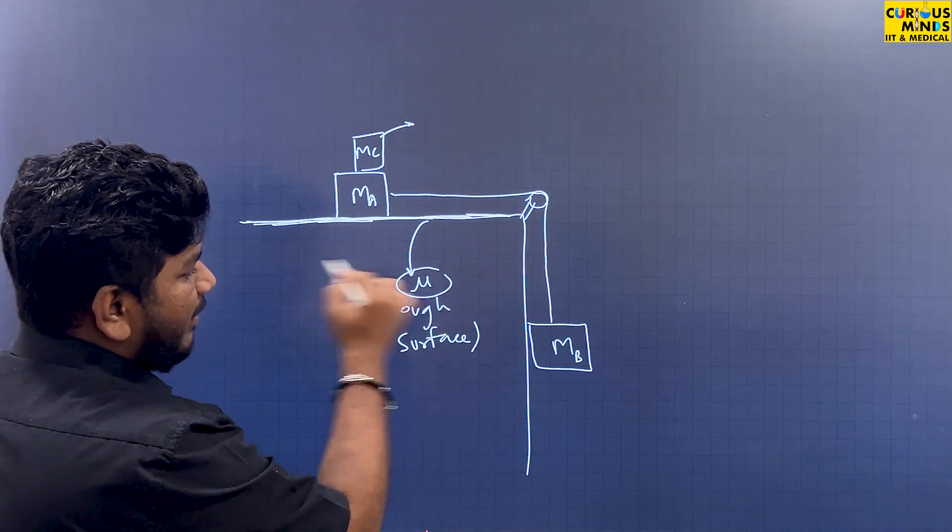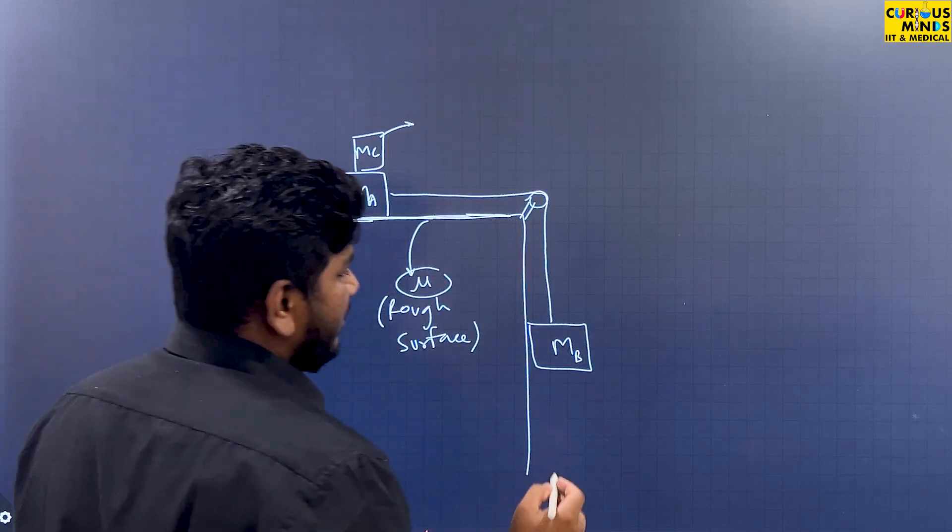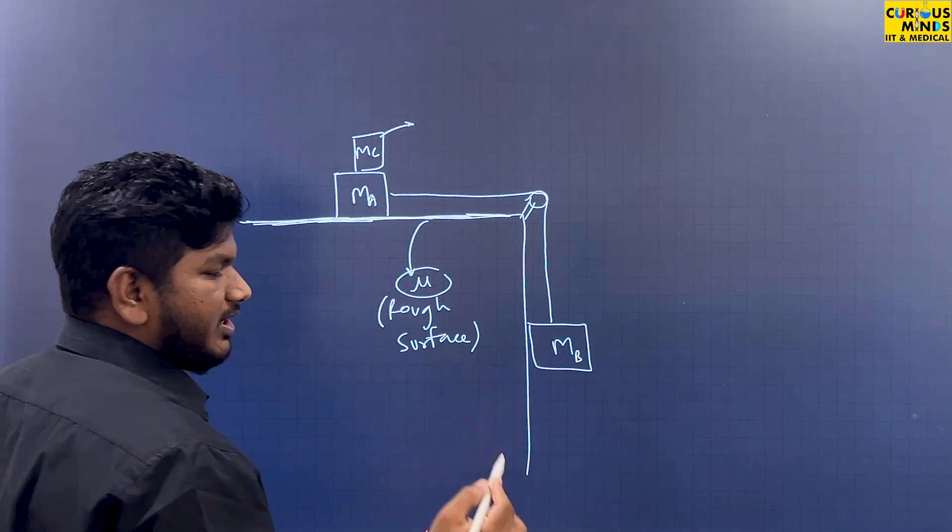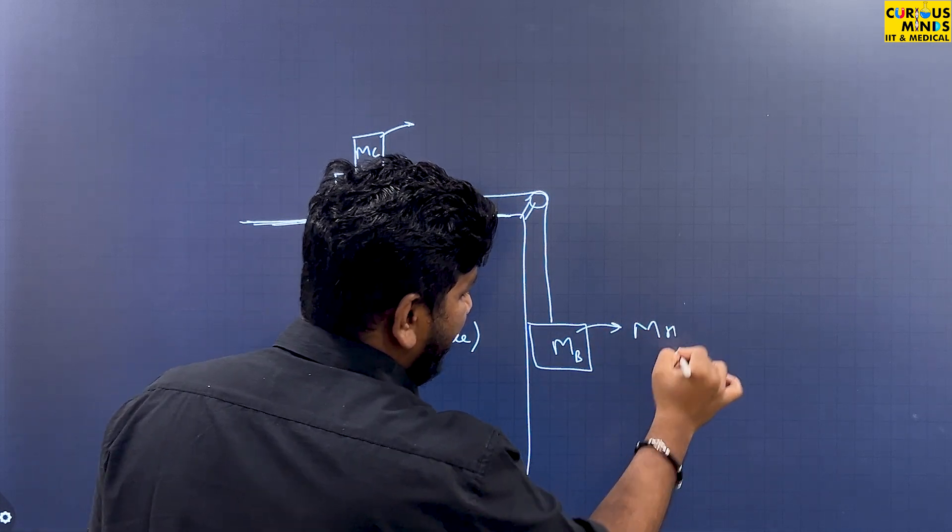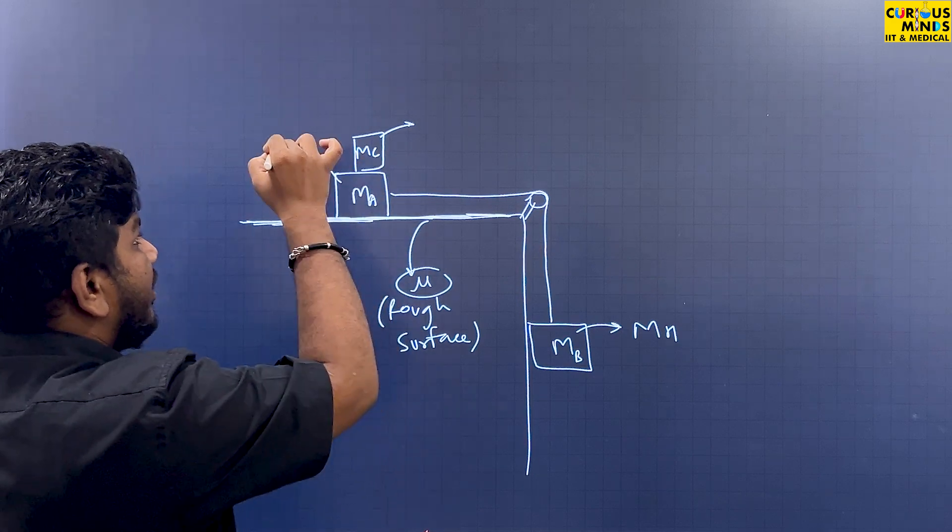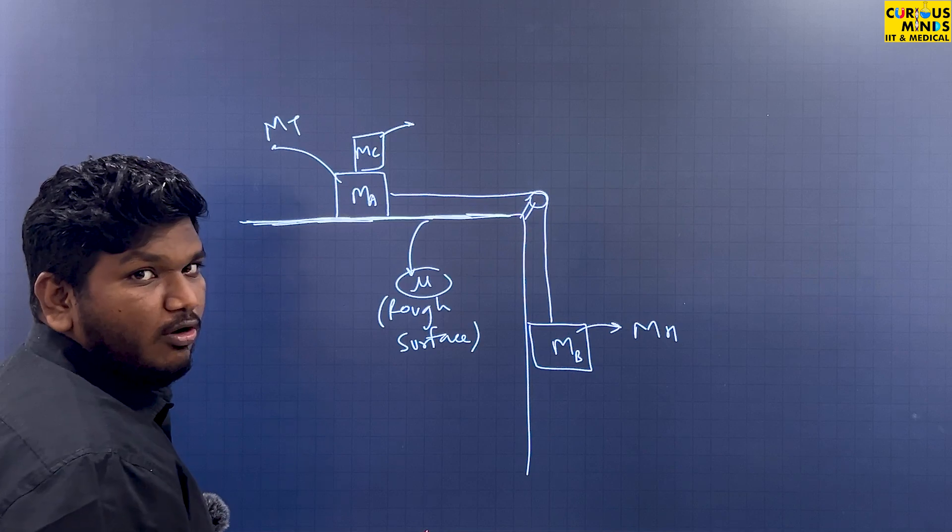The given information is that you have mu friction coefficient. So to apply this trick, you have to establish a nomenclature here. Let this block be named MH, the hanging block. This block is named MT, that is the block on the table.